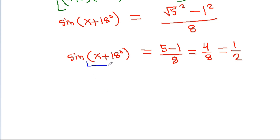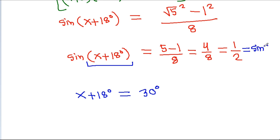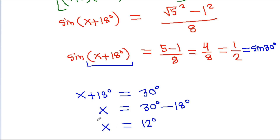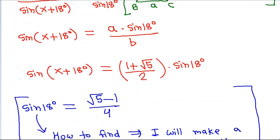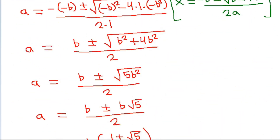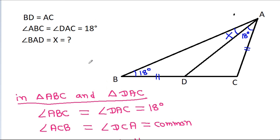Hence x + 18° = 30°, because sin 30° = 1/2. Therefore x = 30° − 18° = 12 degrees.